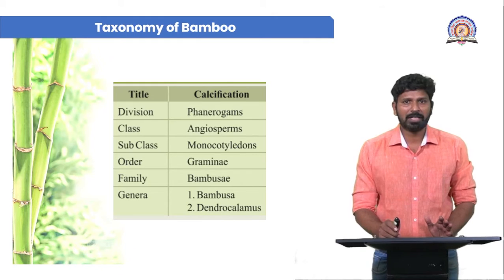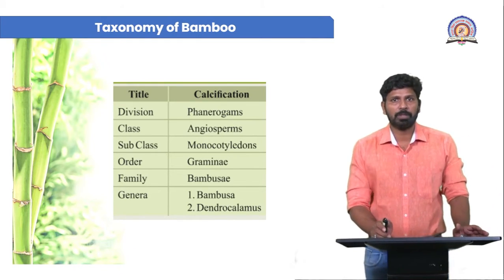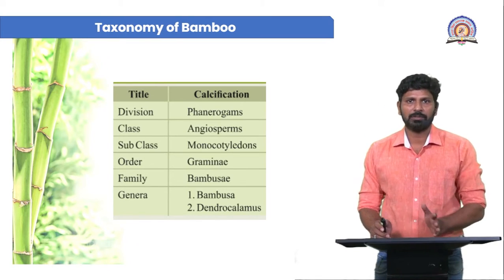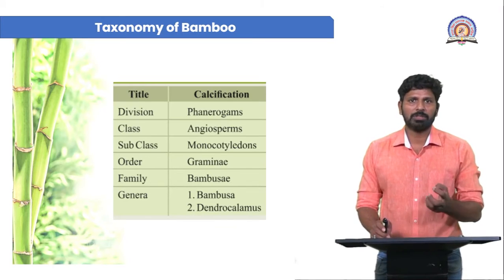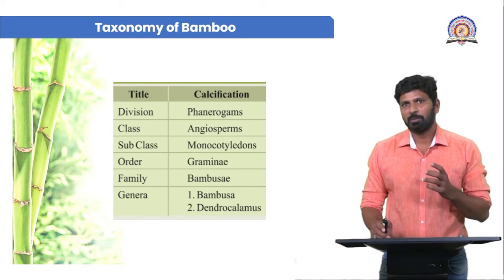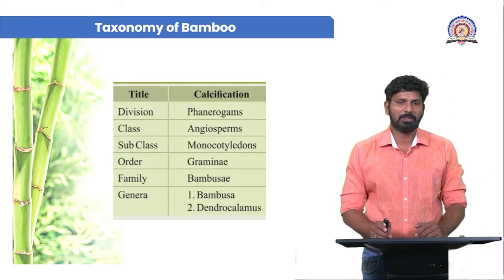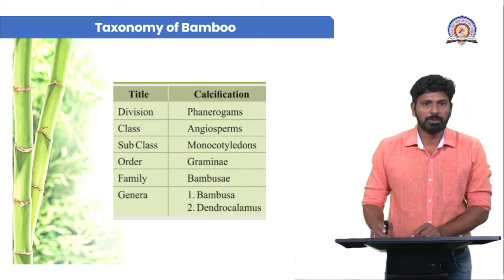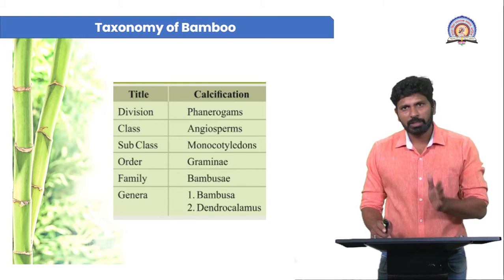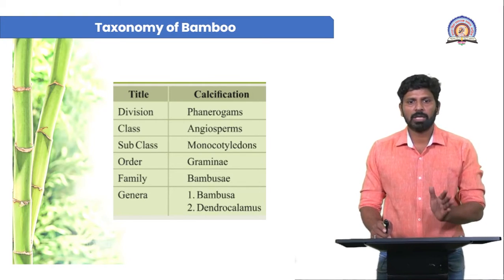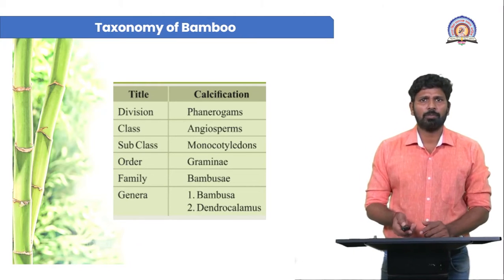The order is Gramineae — which is locally called Gavad. It is very interesting that though bamboo is a very useful product to human beings, it comes under Gramineae. The family is Bambusoideae, and there are two important genera which are economically important: Bambusa and Dendrocalamus. This is the taxonomy of Bamboo.